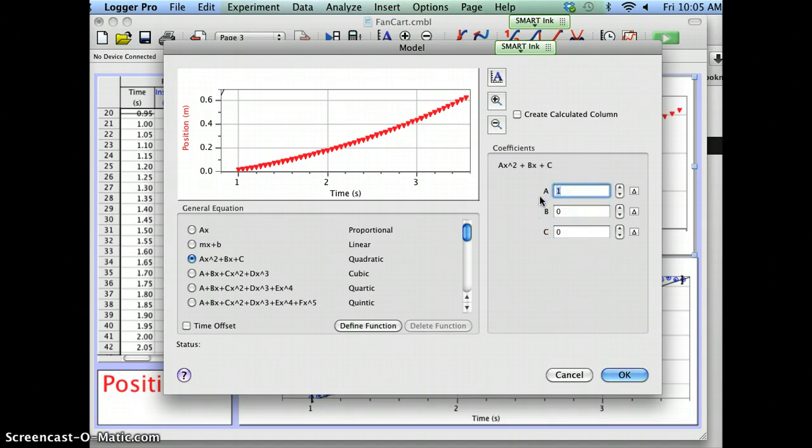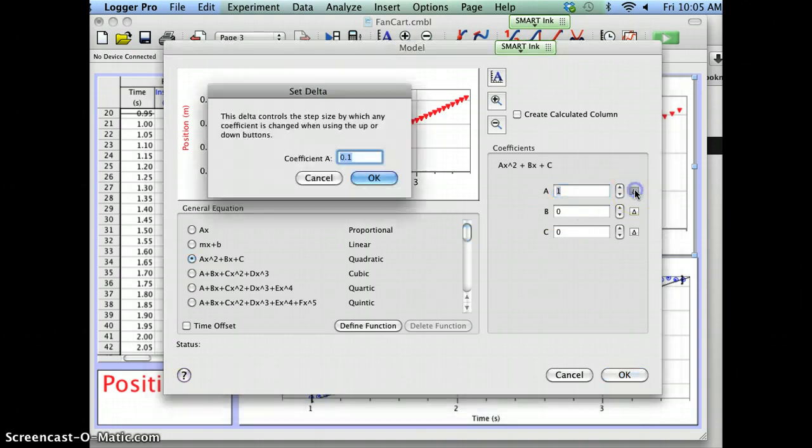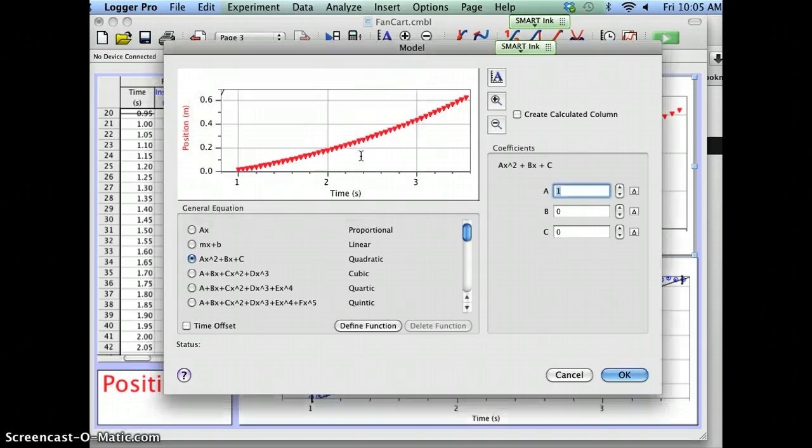And I'm going to make my C value zero and my B value zero for now. And I'm just going to change my A value. Now, if I click on this little triangle, it changes the increment for my A value. I'm going to make it 0.01 and hit return. And I'm going to make this smaller and smaller until I see a curve. Do you see the curve coming? You want to try to fit this curve to your data.